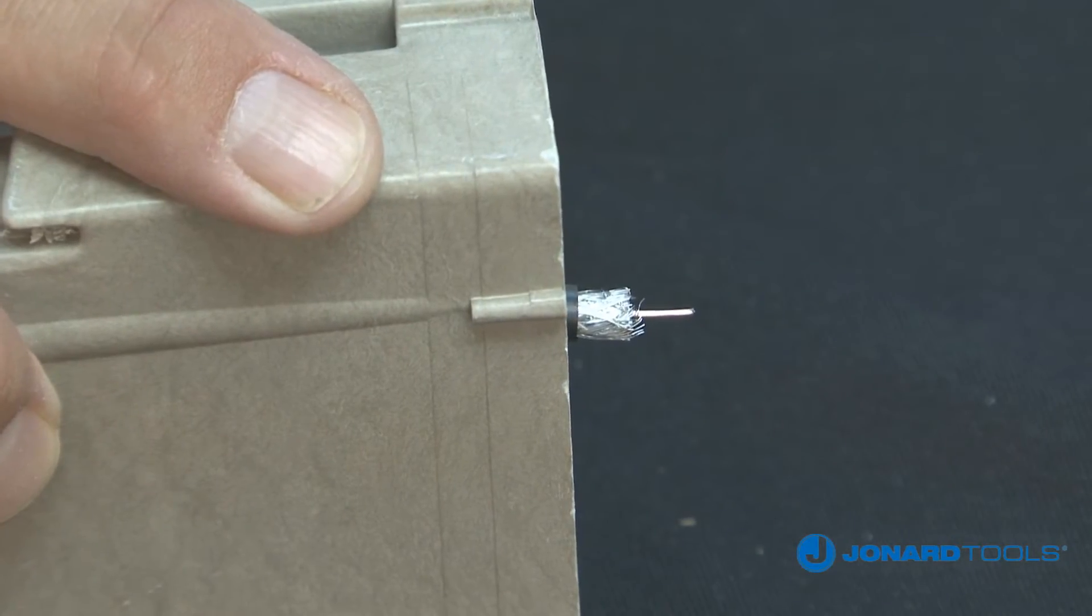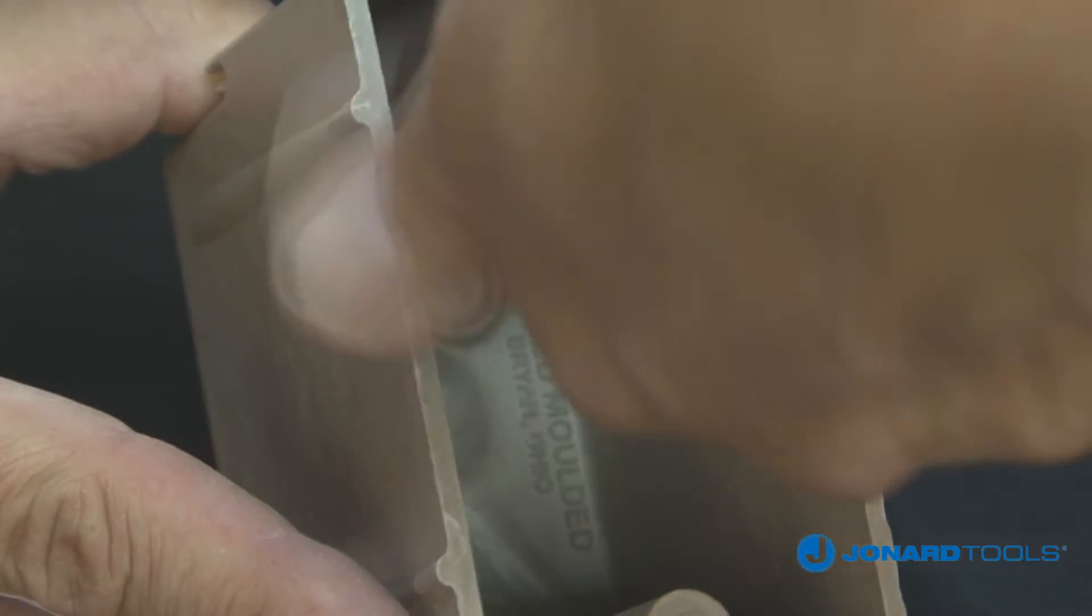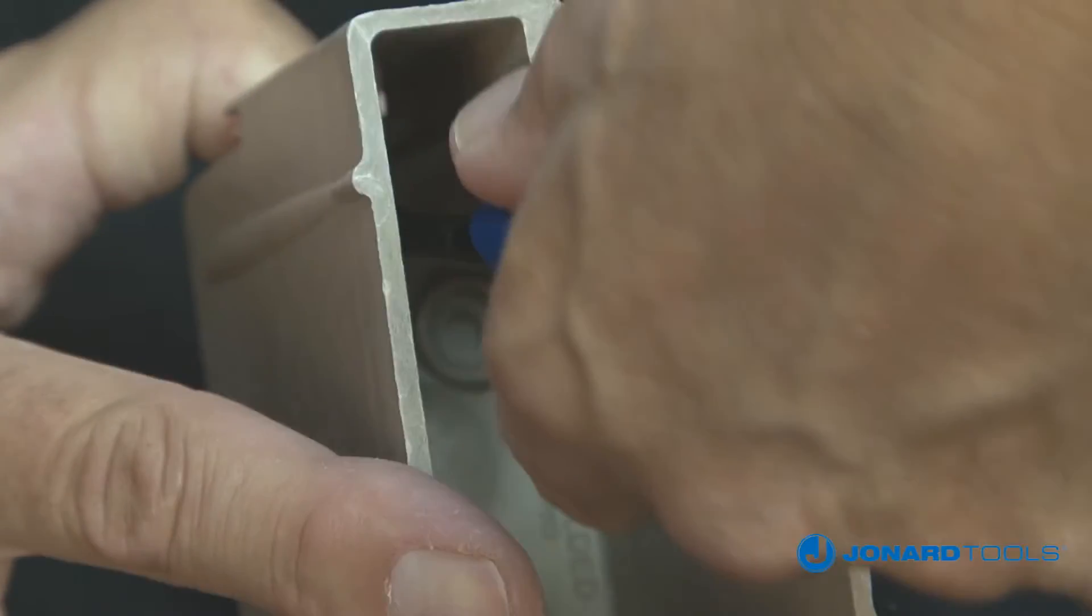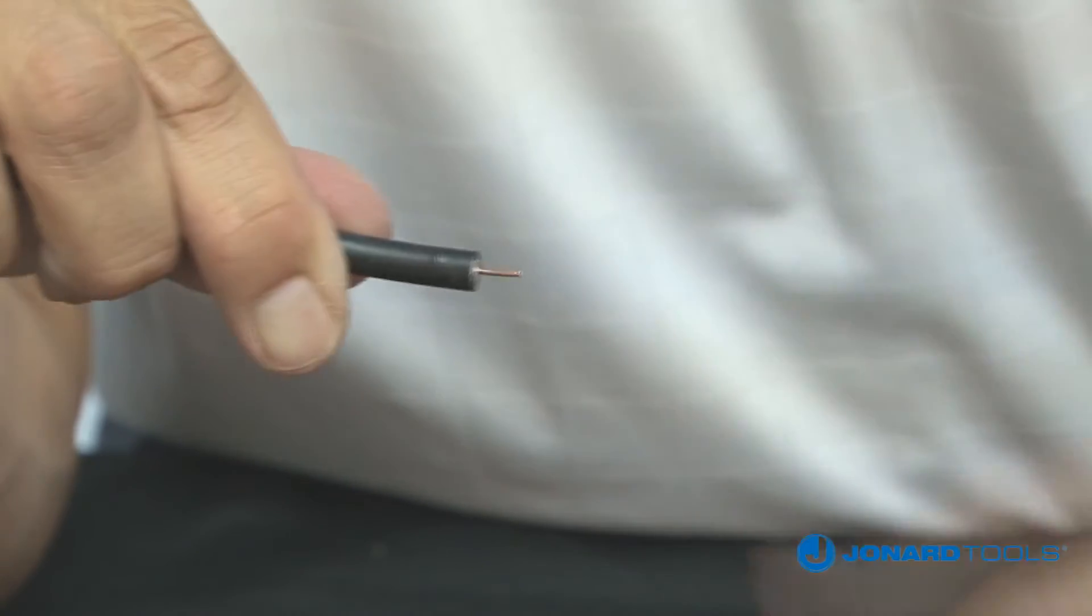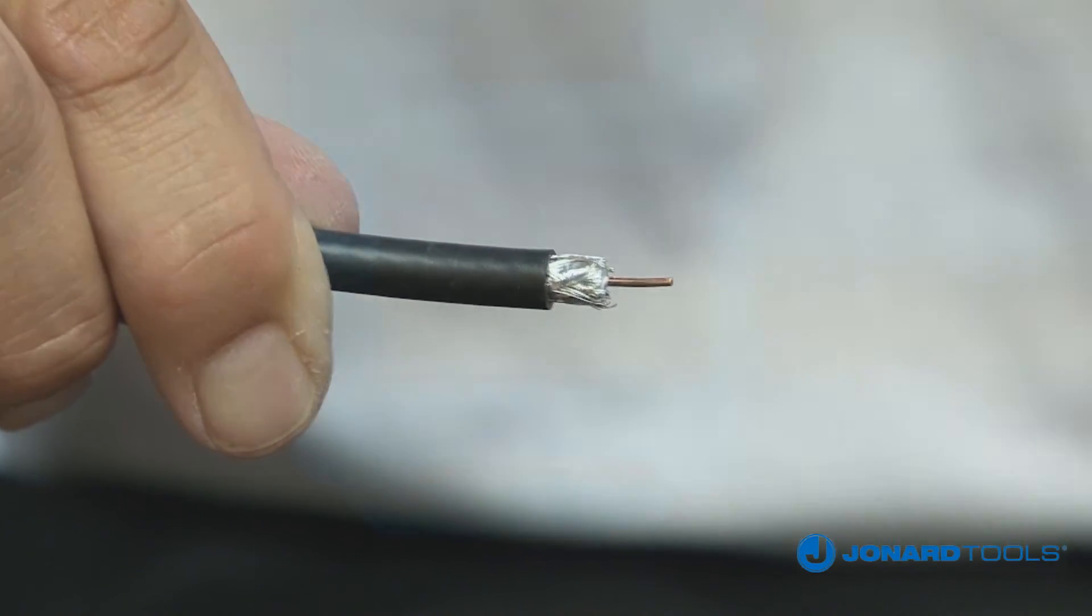To finish stripping the cable, either grip the CSS-596 firmly near the end of the tool and pull to remove cable jacket scraps, or remove the tool and remove the jacket scraps by hand. The CSS-596 also includes a braid brush located on the bottom of the tool.